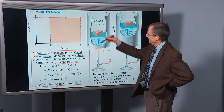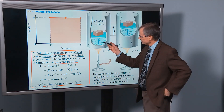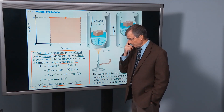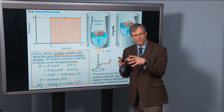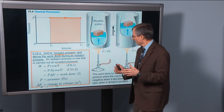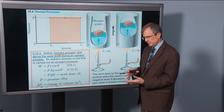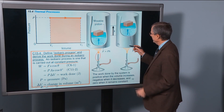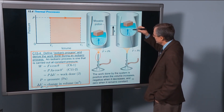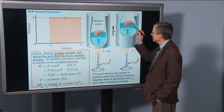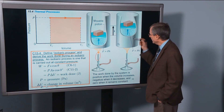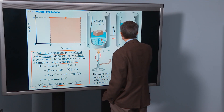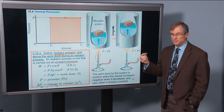One example of an isobaric process: you take a cylinder with some gas in it, and you have a movable piston on top, and you put a weight on top of that piston. That weight guarantees that the pressure inside the system remains constant. If you heat it from below, it's going to expand. So you have a higher temperature and higher volume, but still the same pressure, because the piston and mass are unchanged. That's what we mean by an isobaric process.